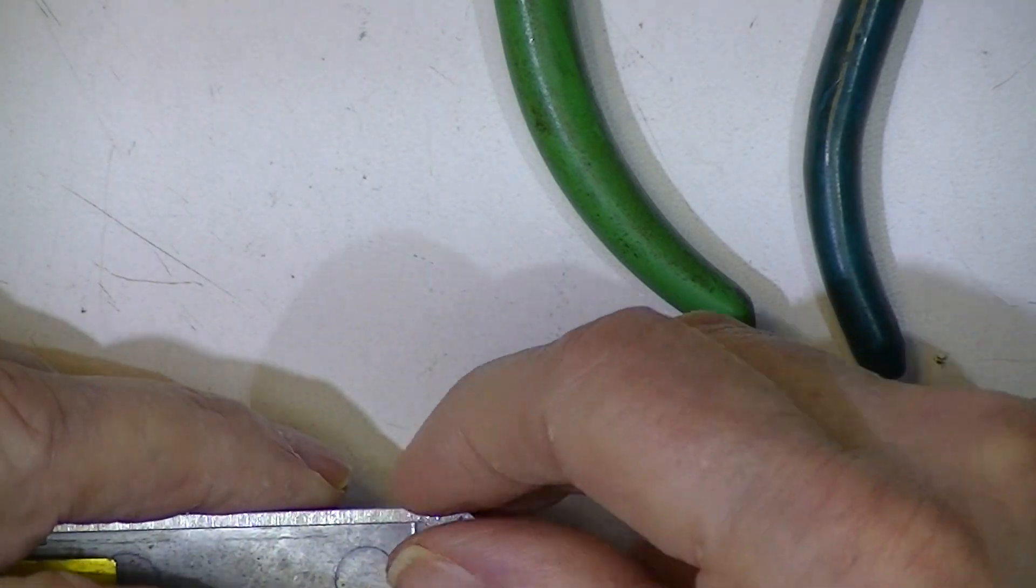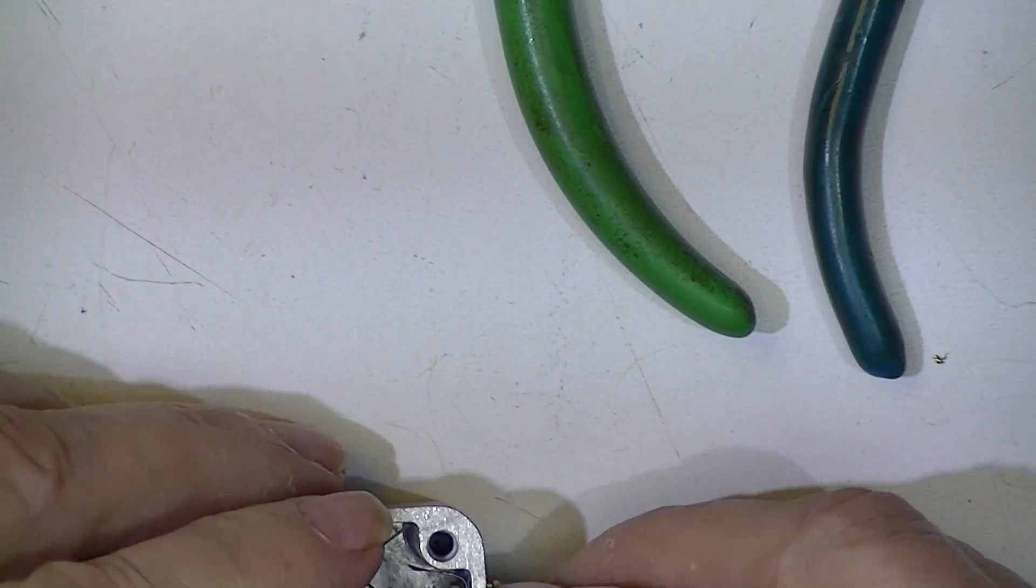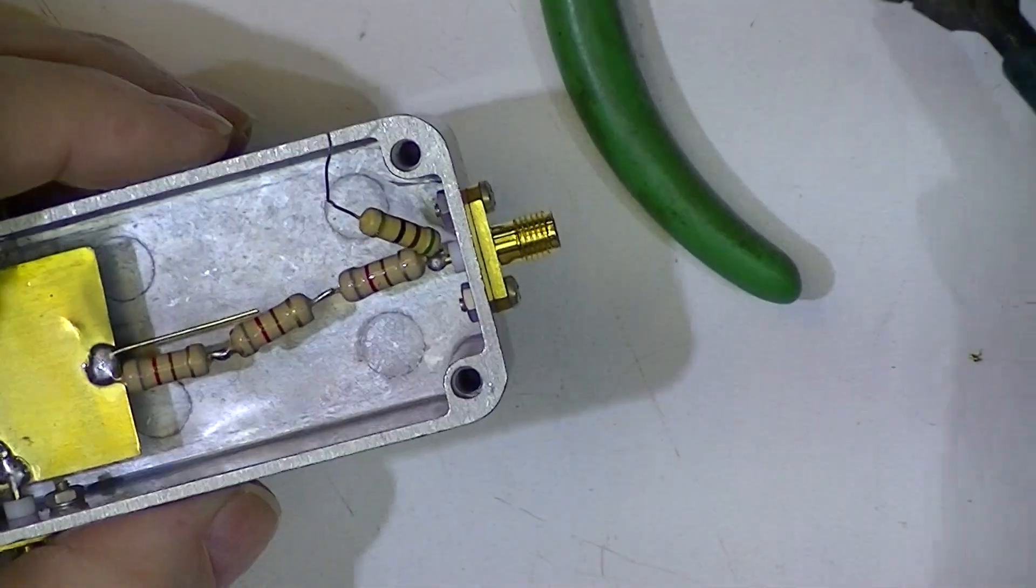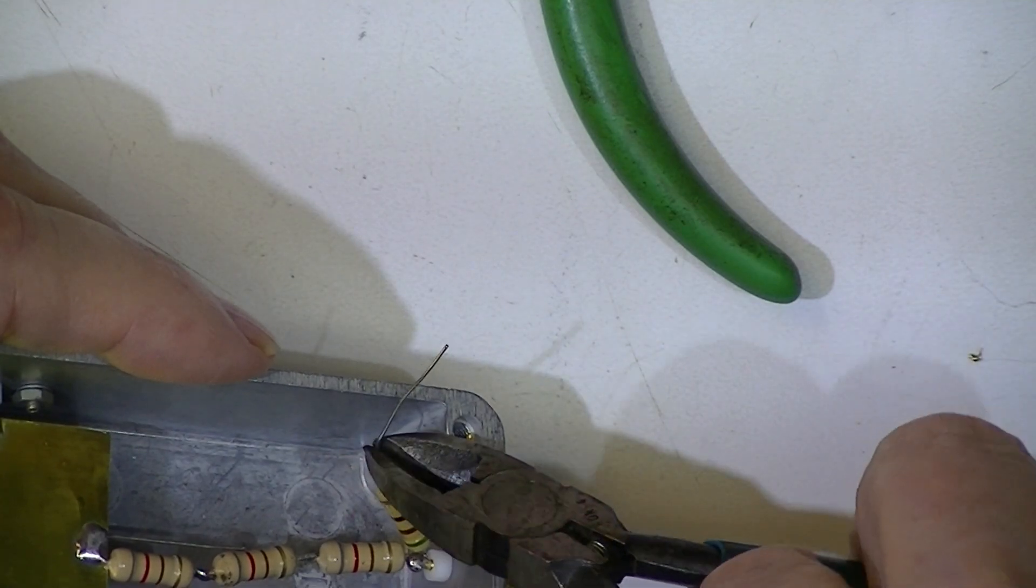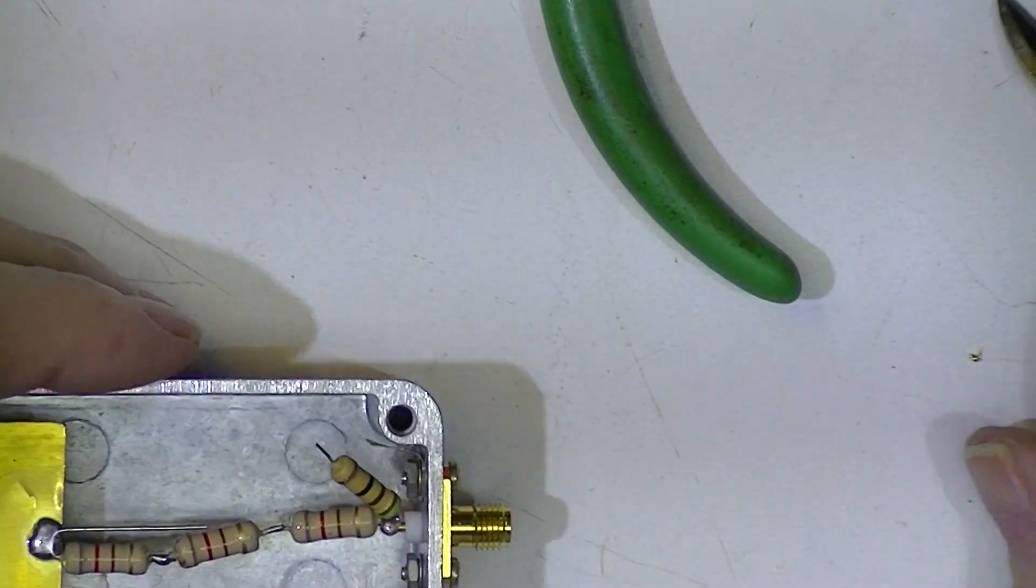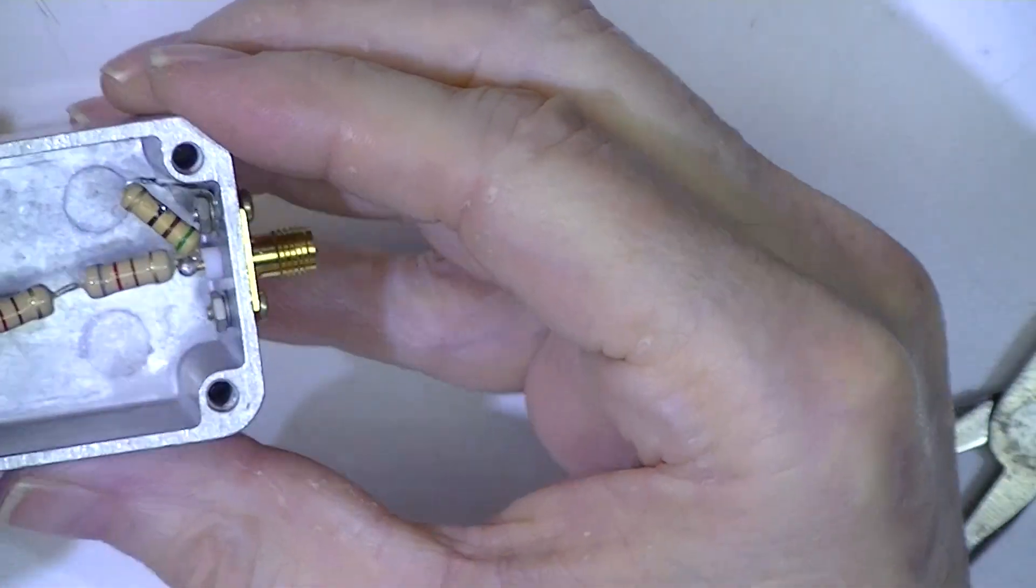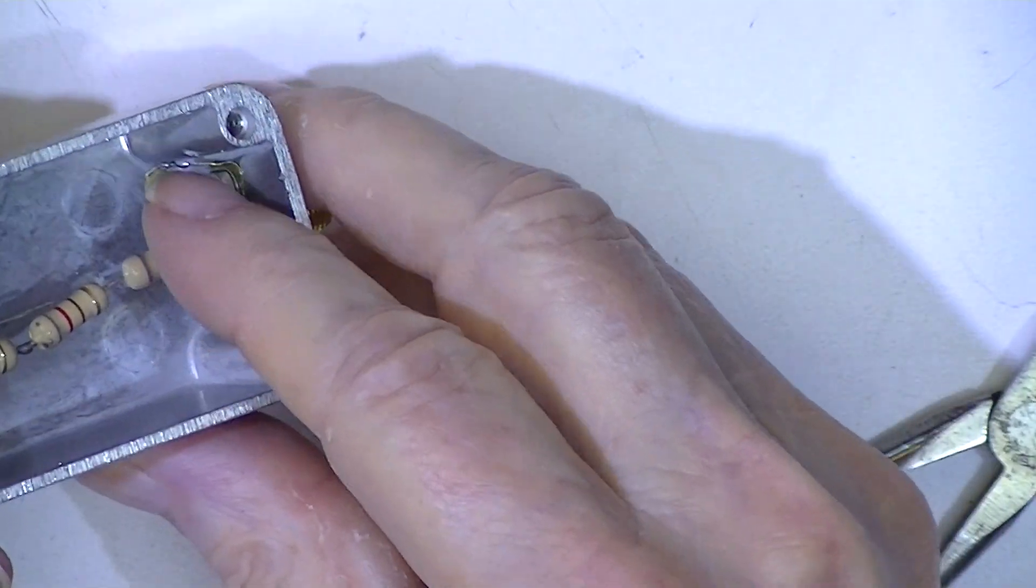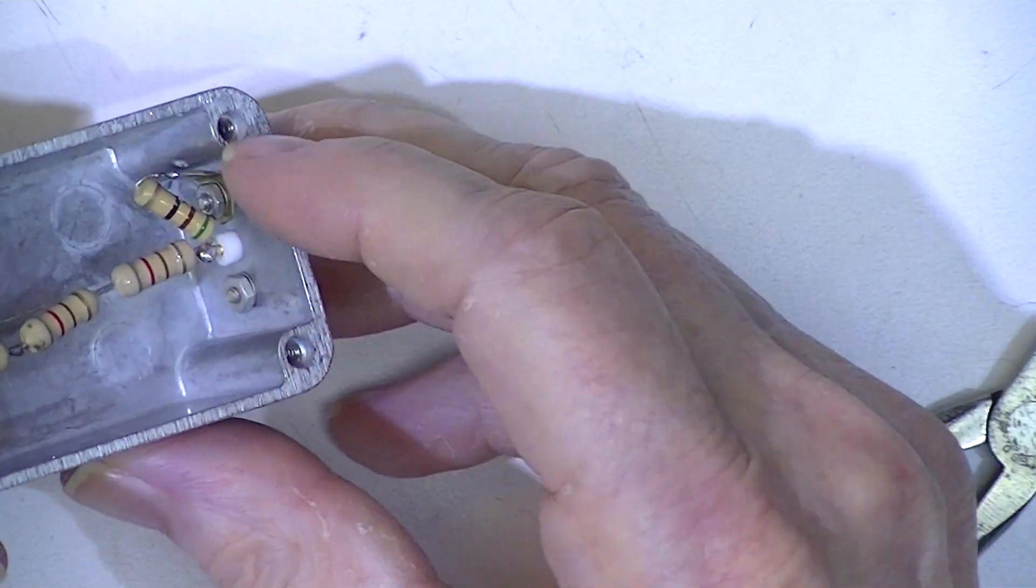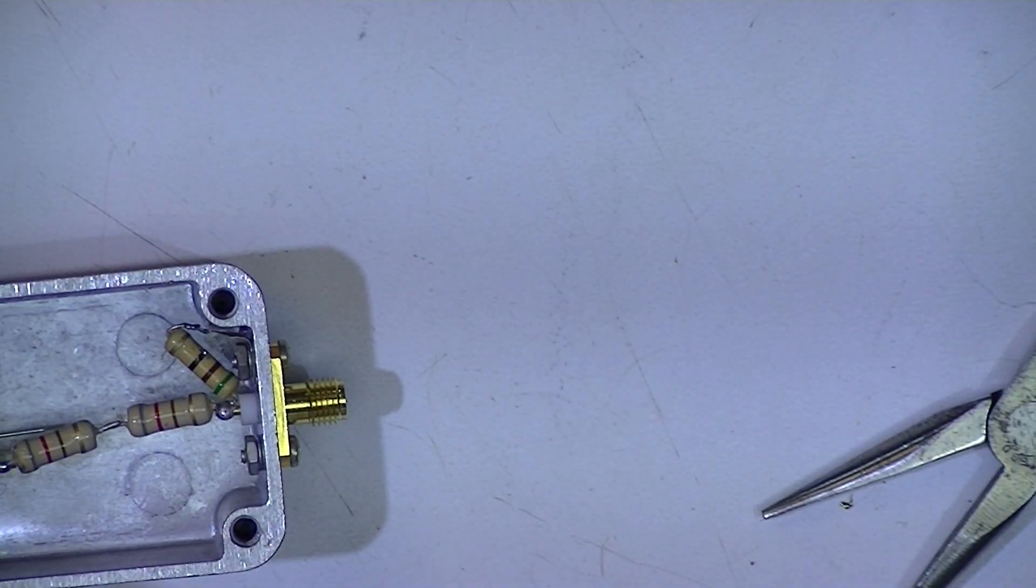Now I'm going to try to bend this resistor and cut its lead pretty short. And there we have the 51 ohm resistor soldered to the little miniature solder lug. Now at this point,